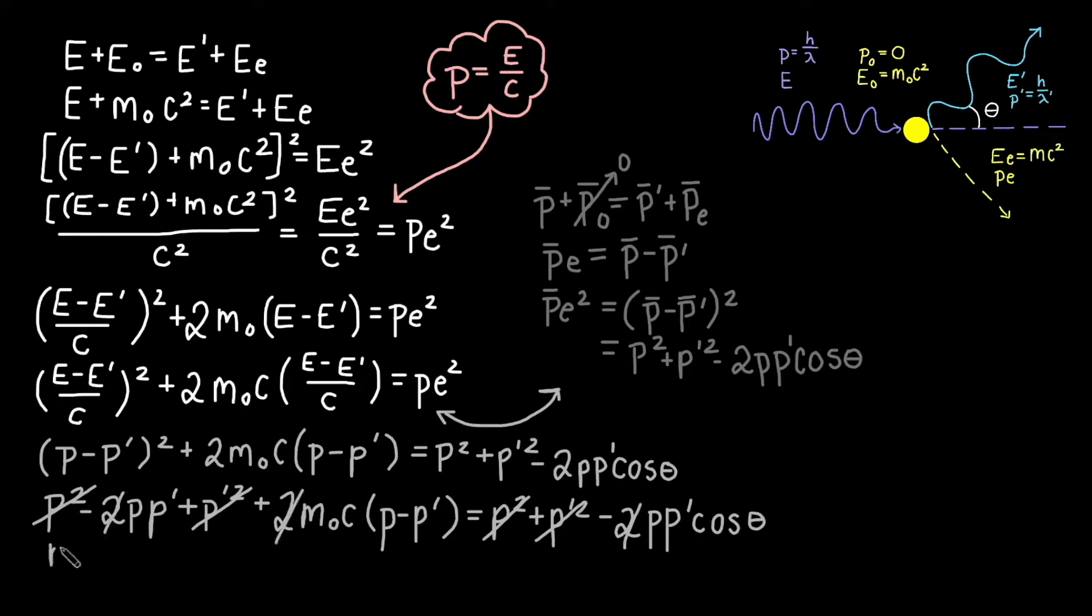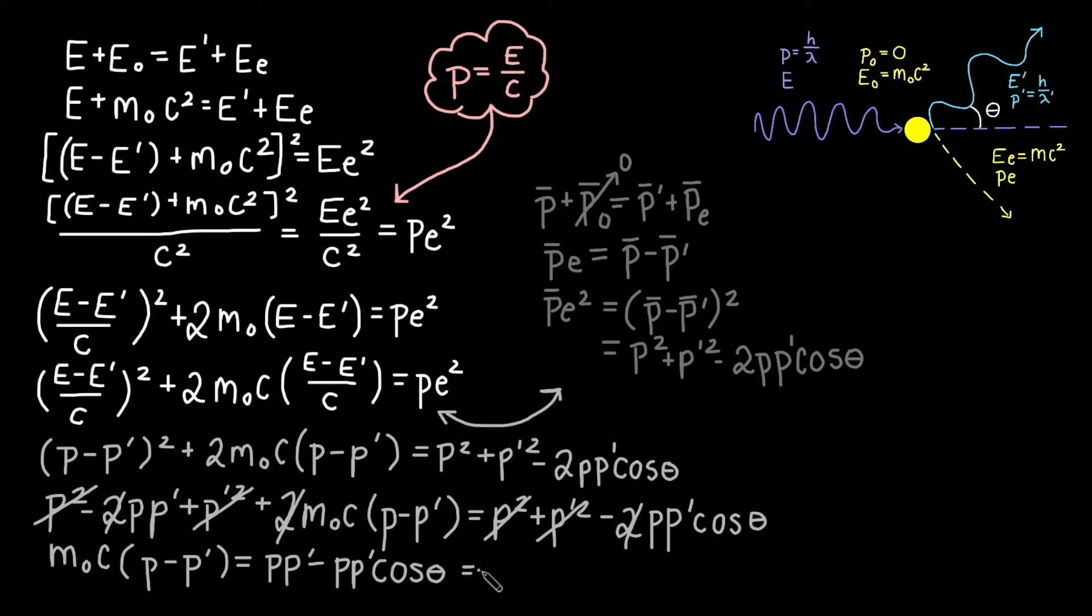Let's put both terms with a p times p prime on the same side of the equation. We can now pull this term out to get p p prime times one minus cosine theta.